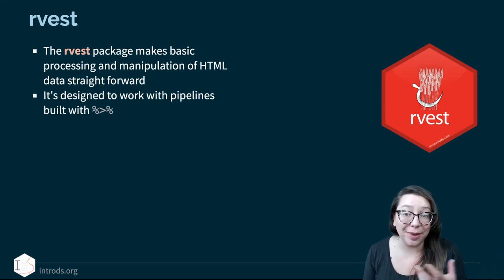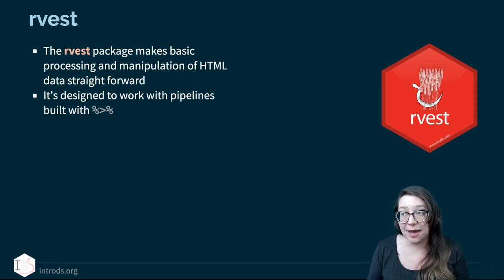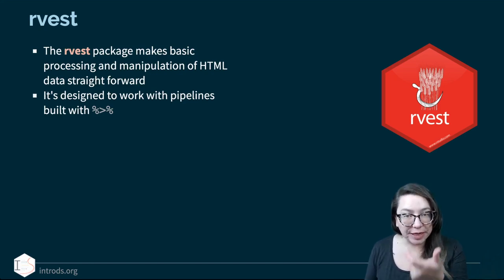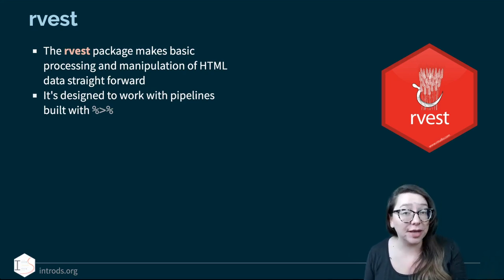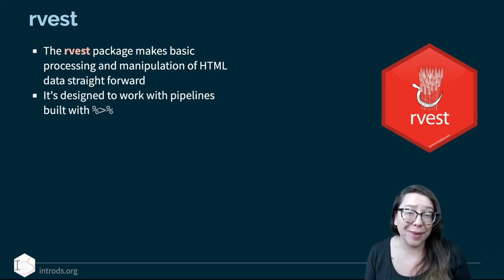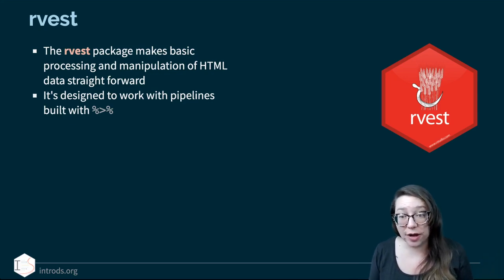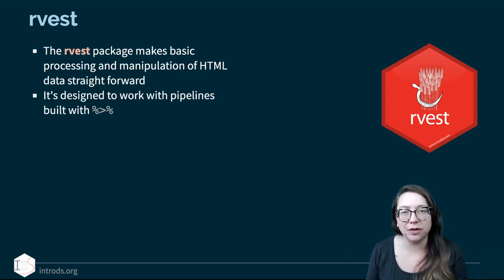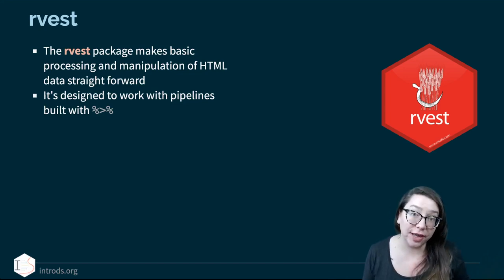RVEST is a package that makes basic processing and manipulation of HTML data quite straightforward. You don't have to understand very well how the HTML source code works — you want to have enough of an idea to be able to extract things out of it. Most importantly, get used to the idea that pieces of data on a website are stored under certain tags. If you can give RVEST functions the appropriate tags, they will extract it for you. You don't need to be able to write website code to retrieve the data. RVEST is designed to work with pipelines built with the pipe operator, so it's very tidyverse friendly — you can chain things together sequentially: go to the webpage, grab this, then do this, then do that.